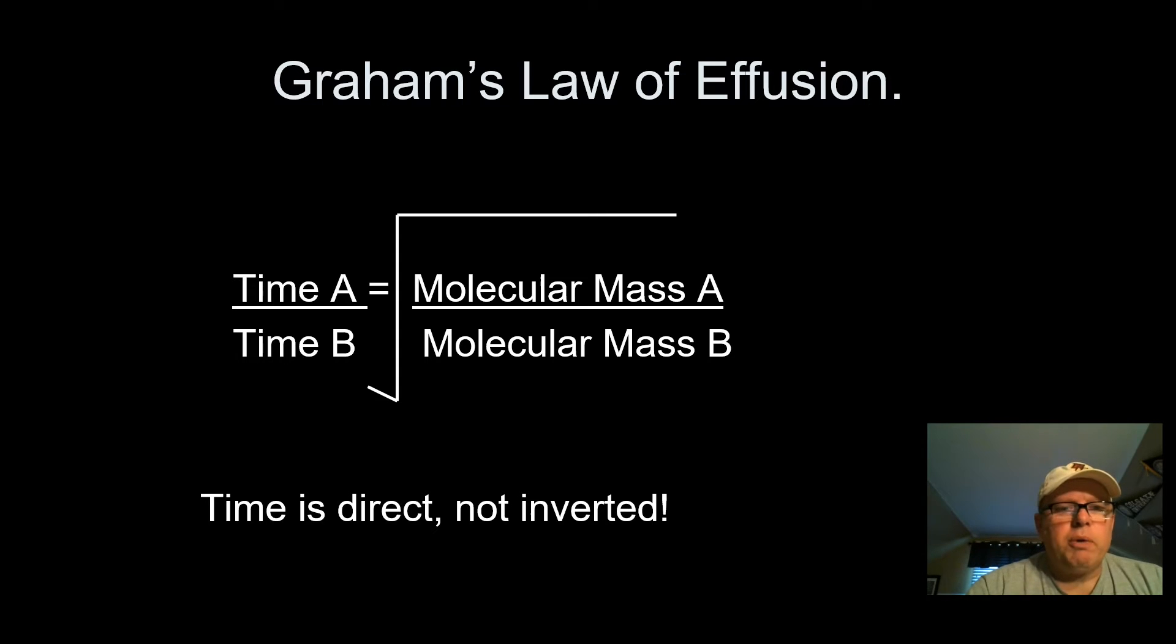Graham's law of effusion when we're talking about time. Now, this is time, so straight time. Time of A over time of B is equal to the molecular mass of A over the molecular mass of B. So there is no inverting them here. They just go straight across. So time is direct, not inverted. Make sure you've got both of those copied down correctly on the back of your periodic table. You're going to be using them both at some point in time here. And don't confuse them. It looks a little confusing, that's a lot of square root type idea. But let's see how this actually works.